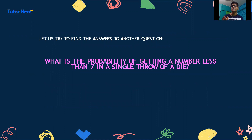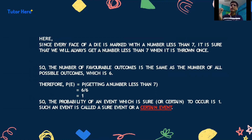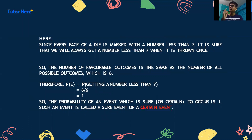Let us find the answer to another question: What is the probability of getting a number less than 7 in a single throw of a die? Since every face of a die is marked with a number less than 7, it is certain we will always get a number less than 7. The number of favourable outcomes equals the total possible outcomes, which is 6. Therefore P(E) equals 6/6, which is 1. The probability of an event that is sure or certain to occur is 1. Such events are known as sure events or certain events.